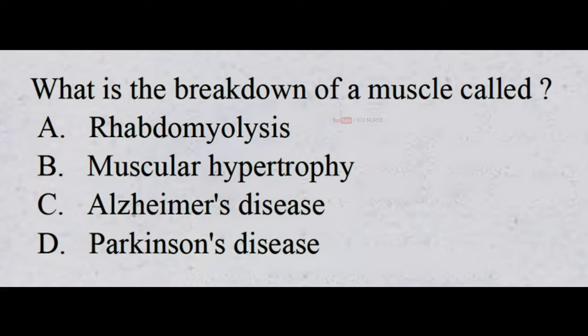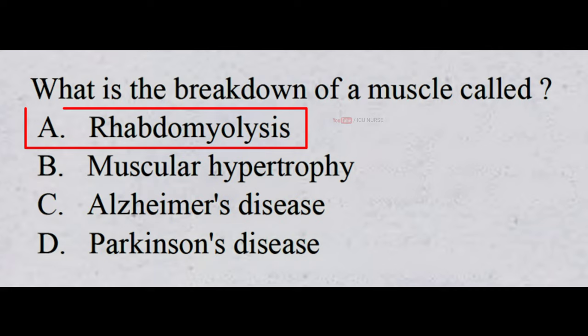What is the breakdown of a muscle called? A. Rhabdomyolysis. B. Muscular hypertrophy. C. Alzheimer's disease. D. Parkinson's disease. And the correct answer is A. Rhabdomyolysis.